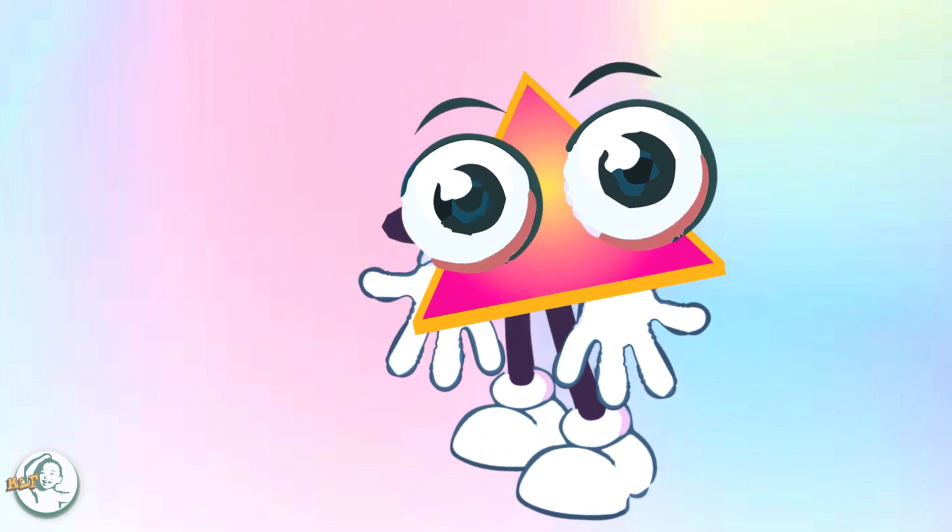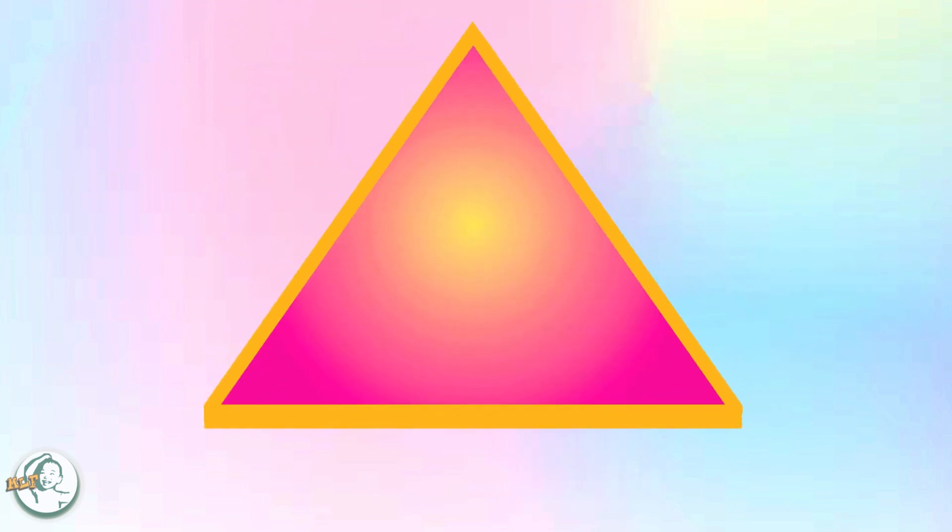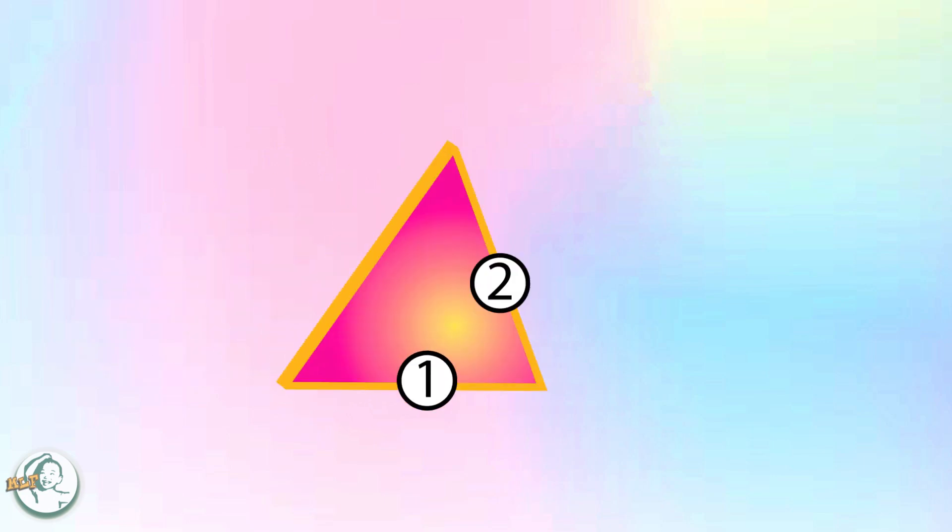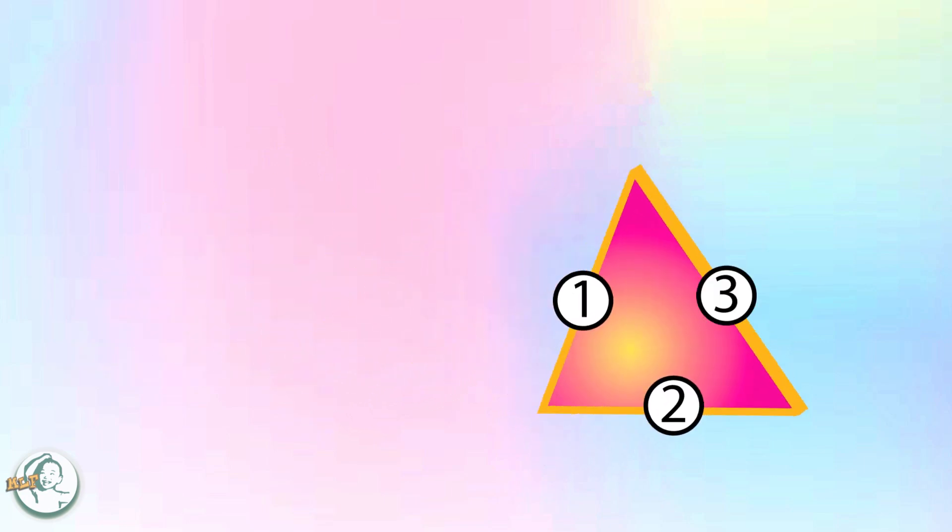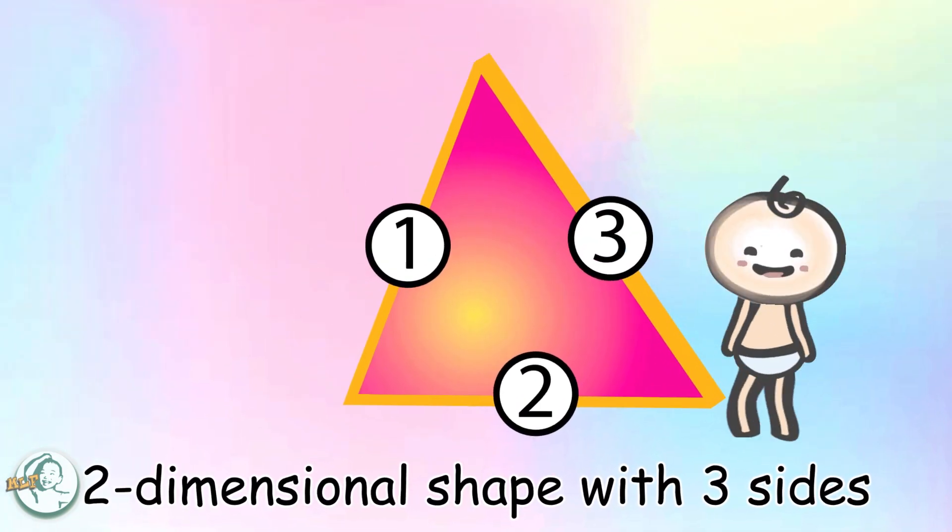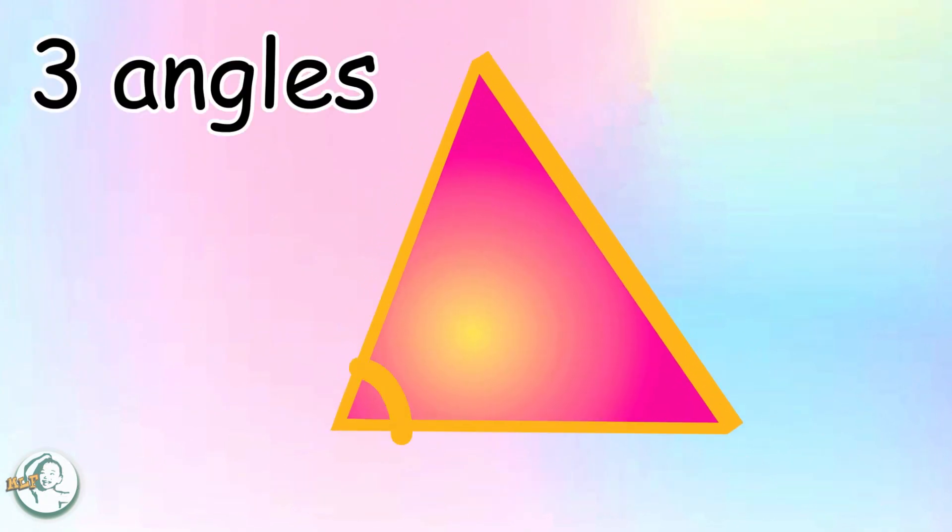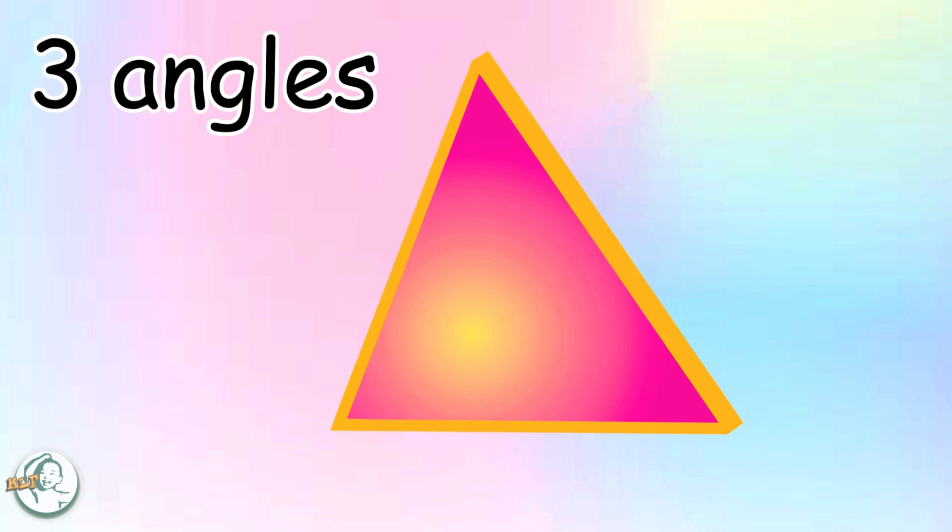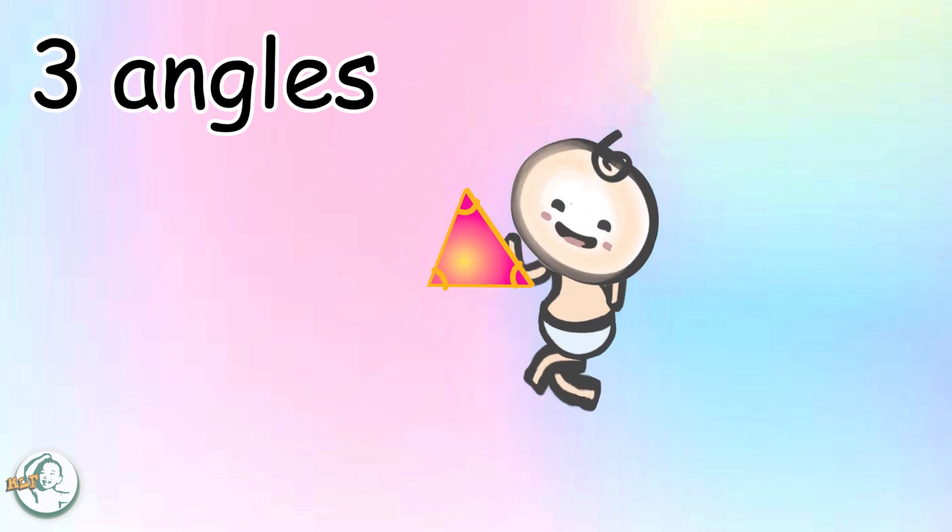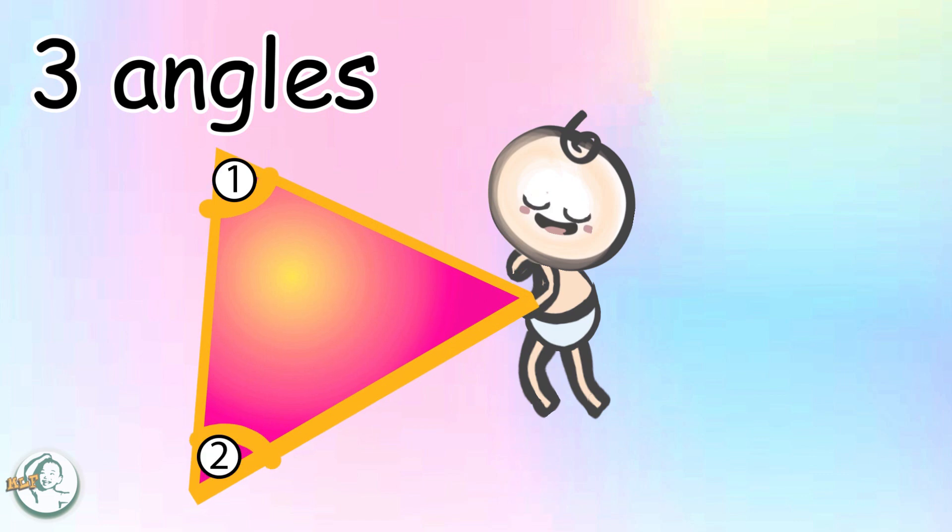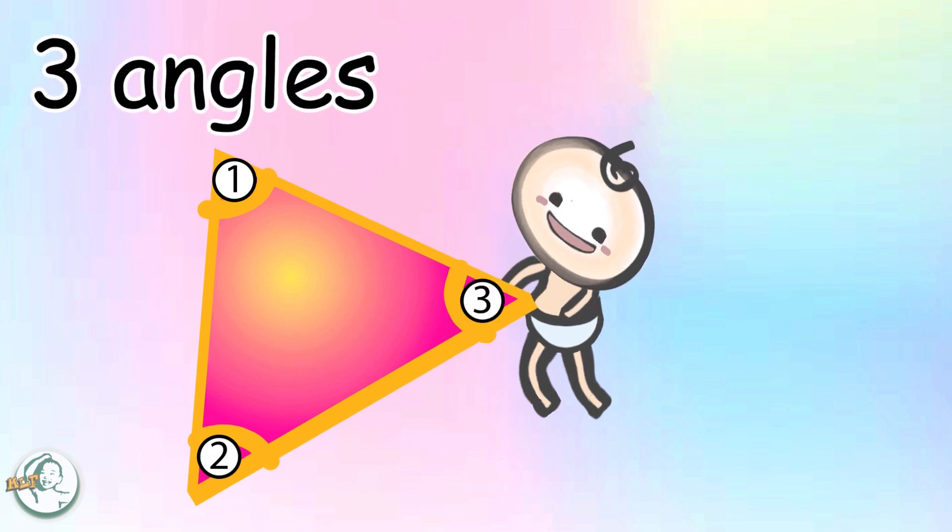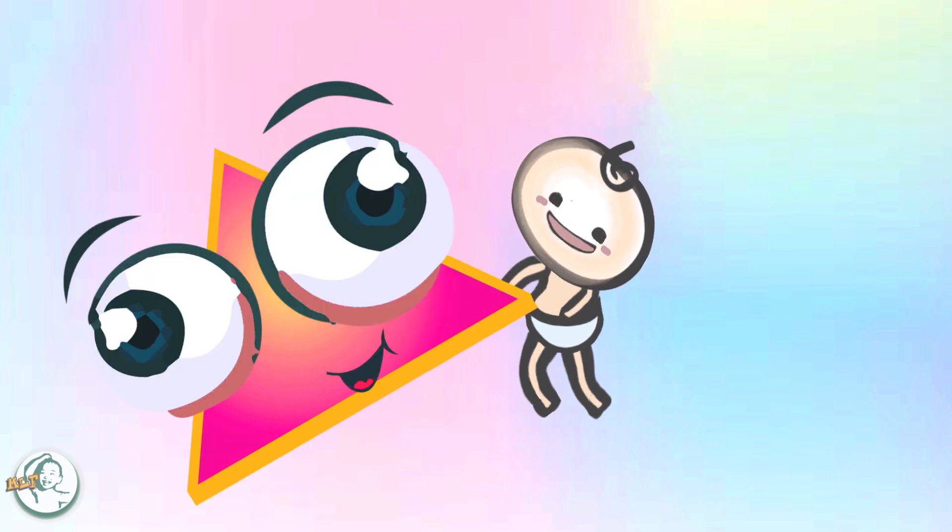The basic features of a triangle are that it is a closed, two-dimensional shape with three sides, three angles, and three vertices.